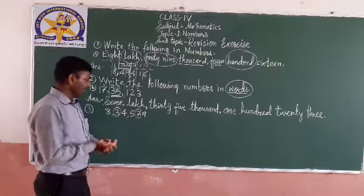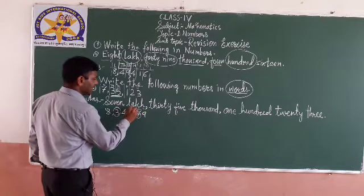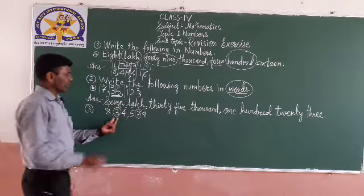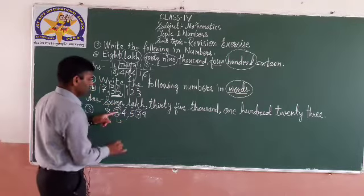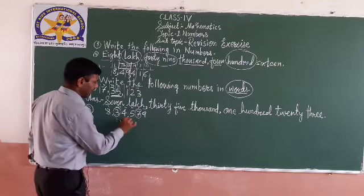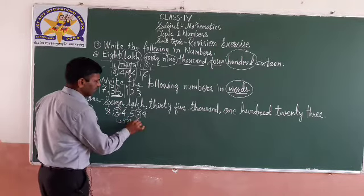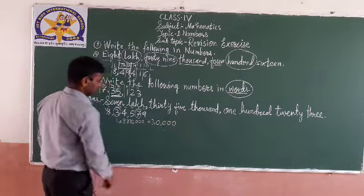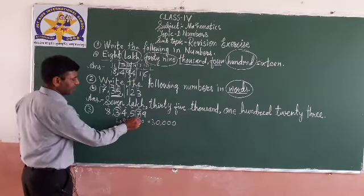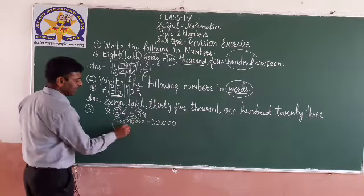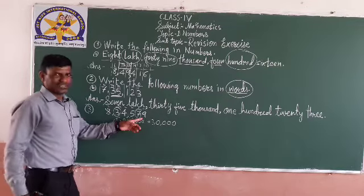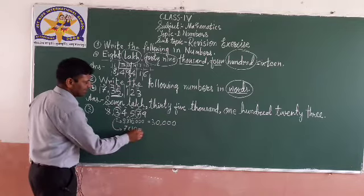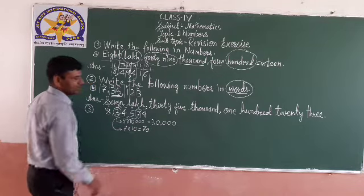How will we find out? Write: ones place, tens place, hundreds place, thousands place, ten-thousands place, lakhs place. So 3 is in which place? Ten-thousands place. So 3 multiplied by ten thousand — you get thirty thousand. And what is the place value of 7? 7 is in the tens place. So 7 multiplied by ten — seventy.